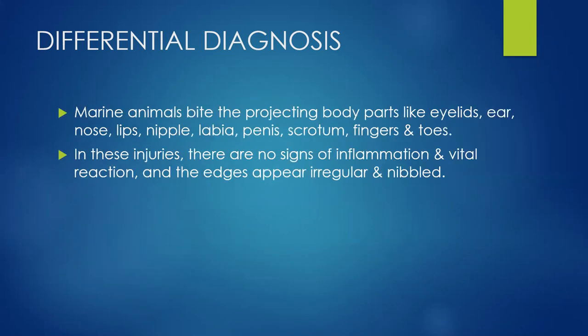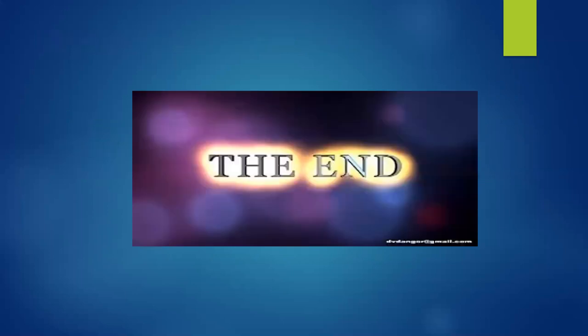Marine animals bite projecting body parts like eyelids, ears, nose, lips, nipples, labia, penis, scrotum, fingers, and toes. In injuries caused by insects, ants, or marine animals there will be no signs of inflammation or vital reaction, and the edges will appear irregular and nibbled. This completes the topic of abrasion; in the next class you will be learning about contusions and lacerations.